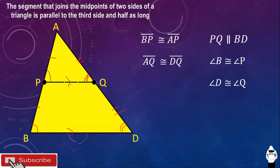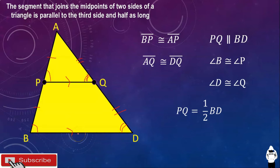Now, focusing on the midline of our triangle: if we take the measurement of the midline PQ, it is one half of BD. That means the measurement of PQ is one half of the measurement of BD, or PQ is equal to BD over 2.